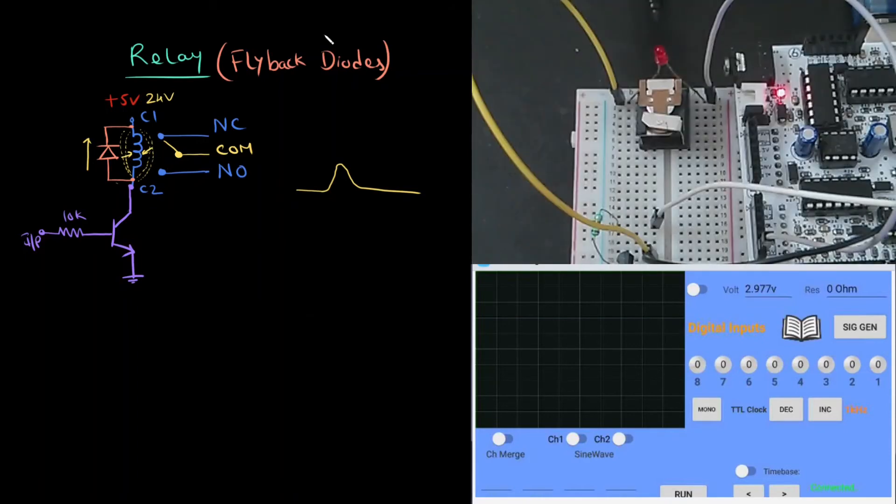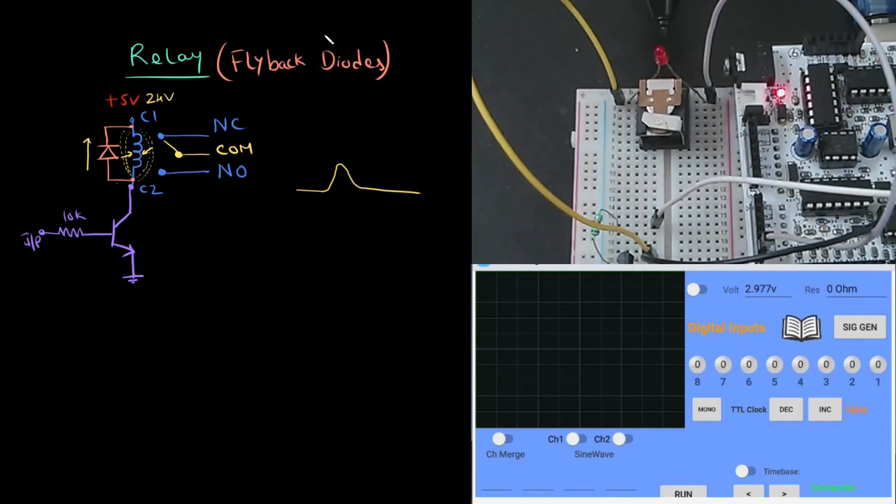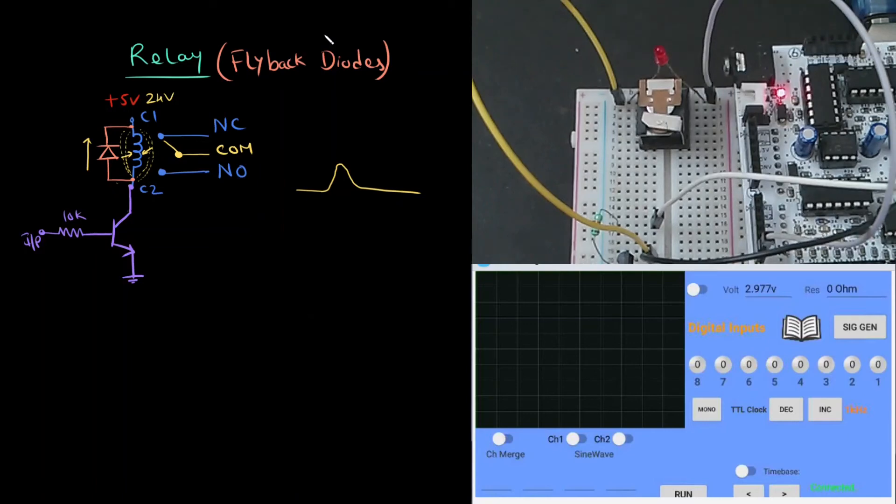You can see here, instead of the regular diode, I have placed an LED so that we can see if there are any voltage spikes when we turn off the relay. Let me turn off the lights so that the spike will be easily visible on the LED.